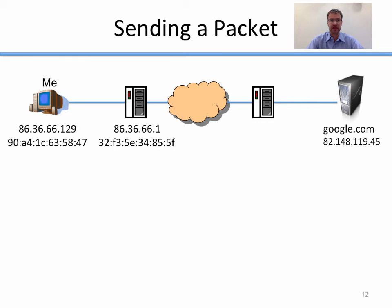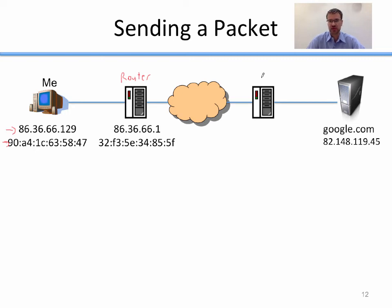Let's do an example of sending a packet. I have my computer here at QU with an IP address and a MAC address. Next to me is my router, which also has an IP address and a MAC address. Then from the router, everything goes to the Internet. On the other side, we have Google's router and Google's server. I don't know the MAC address of someone on the other side of the Internet — I only know MAC addresses of devices local to me — but I know Google's IP address.